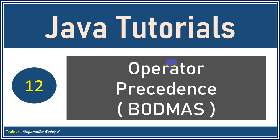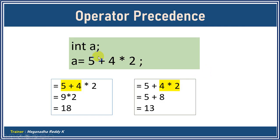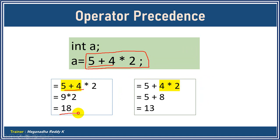Hi everyone, this is Megnath, welcome back. In this module we talk about operator precedence. What is the meaning of operator precedence? Let's take an expression like a = 5 + 4 * 2. In this case we need to know what operation has to be done first. If we add the first two numbers, the result will be 18, but if we do multiplication first, the answer will be 13.